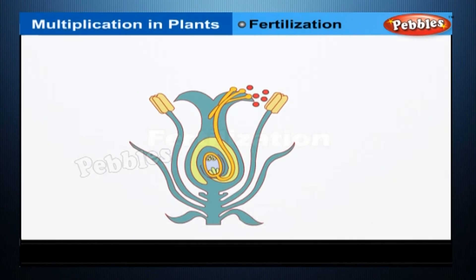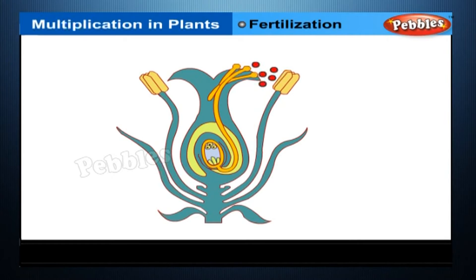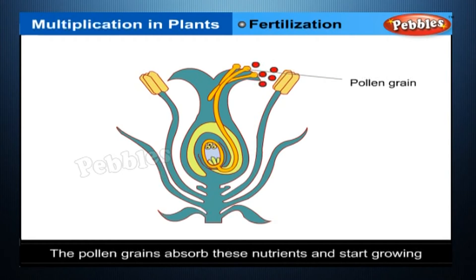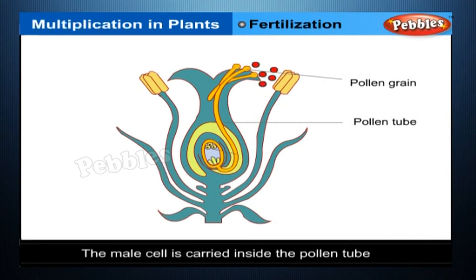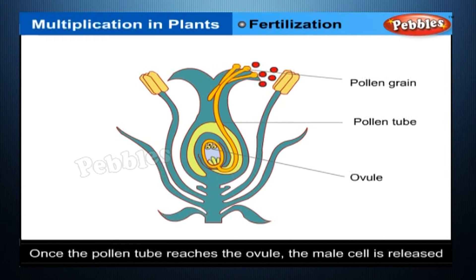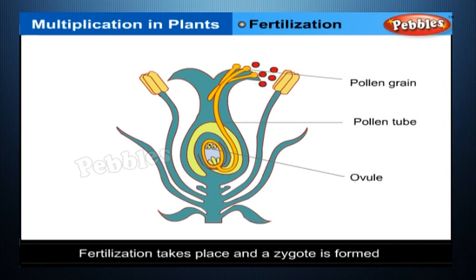Fertilisation: after successful pollination, the stigma secretes nutrients if pollen has landed on the correct stigma of the correct plant. The pollen grains absorb these nutrients and start growing. The pollen tube keeps growing until it reaches the ovule inside the ovary and enters it. The male cell is carried inside the pollen tube. Once the pollen tube reaches the ovule, the male cell is released and fuses with the female gamete, or egg, present there. Fertilisation takes place and a zygote is formed.